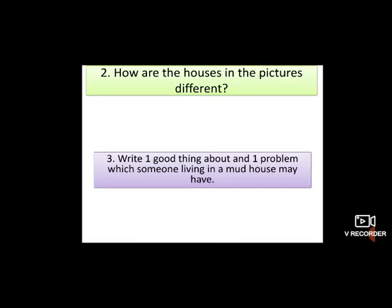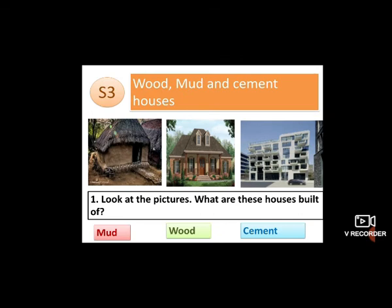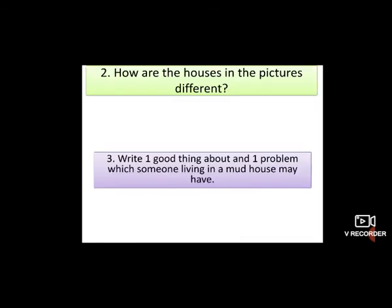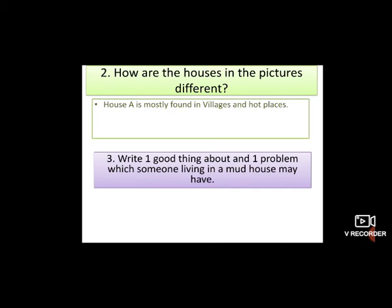The next question asks: how are the houses in the picture different? We have seen these three kinds of houses. The first difference is their material. The second difference is their location — the first house is mostly found in villages and hot places, house B is mostly found in cold areas or hill stations, and the third house is mostly found in cities.